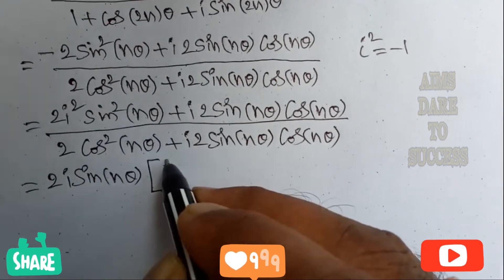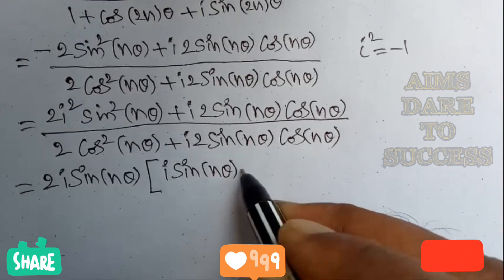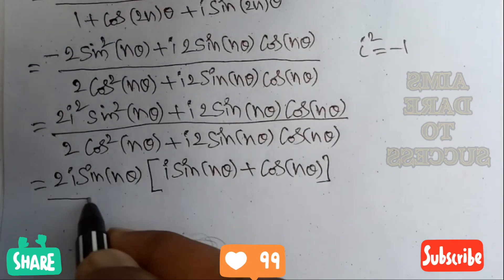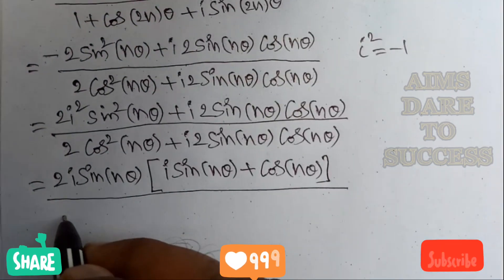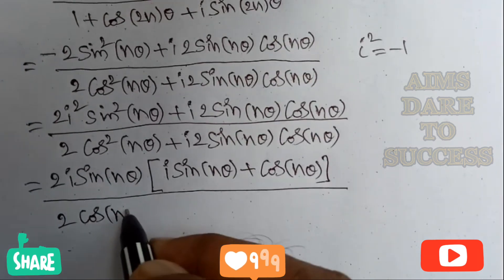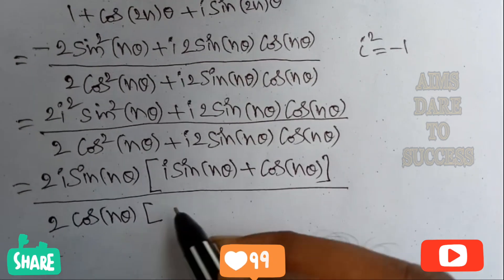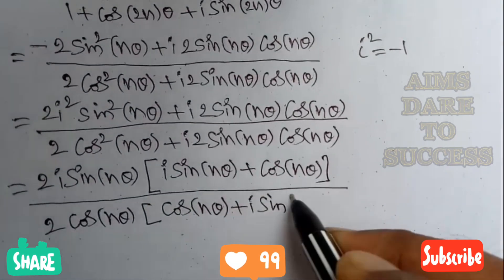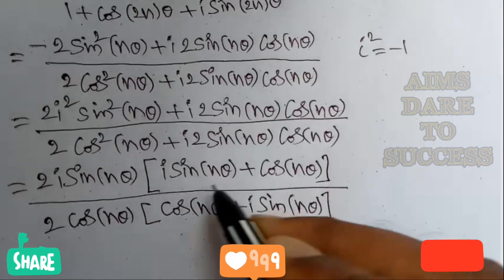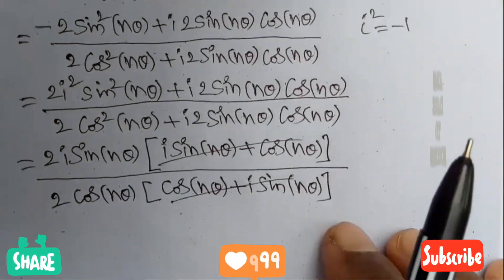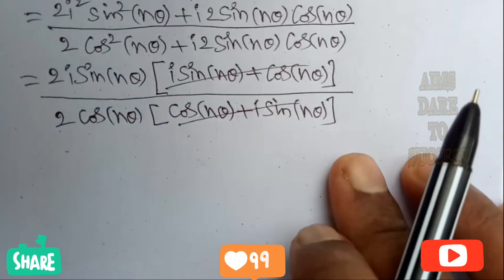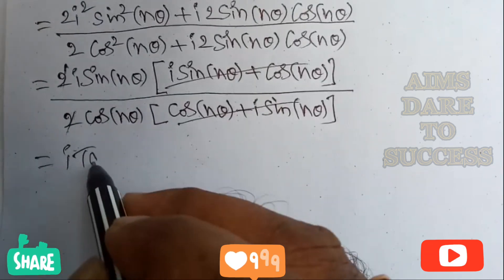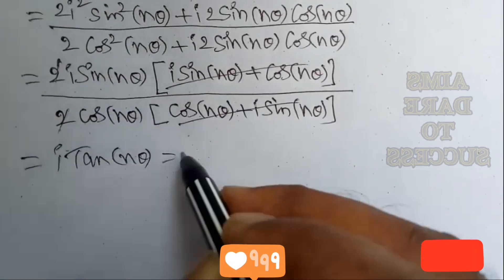The remaining value in the numerator is i sine n theta plus cos n theta. From the denominator, taking 2 and cos n theta as common, the remaining value is cos n theta plus i sine n theta. The factor i sine n theta plus cos n theta in the numerator and cos n theta plus i sine n theta in the denominator cancel each other. This leaves i times sine n theta over cos n theta, which equals i tan n theta. This is the RHS.